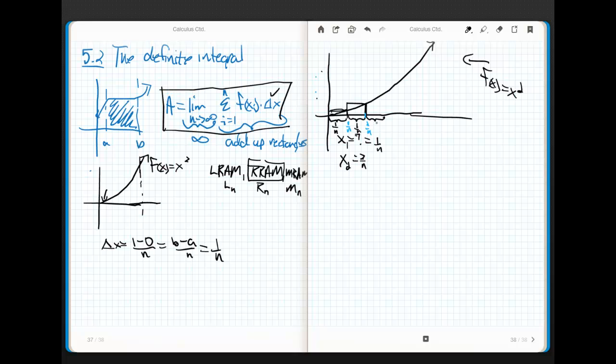So x sub 2 is going to be 2 over n. If I go over another 1 over n to build a rectangle, then this thing stops at 3 over n. So x sub 3 is going to be 3 over n. The problem is, the formula says x sub i. If x sub 1 is 1 over n and x sub 2 is 2 over n and x sub 3 is 3 over n, what's x sub i going to be? It's just going to be i over n.